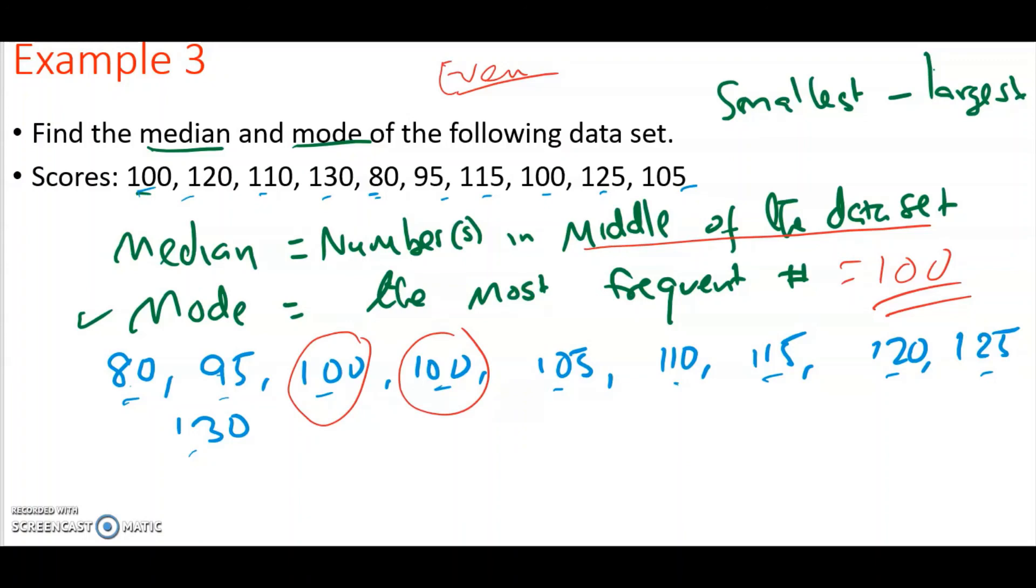So the numbers are 10 here. If I count 4 on this side - 1, 2, 3, 4 - and 4 on the other side, the two numbers that fall in the middle are 105 and 110. So what I have to do is I add those two and divide by 2. So this will give me 215 divided by 2, which is equal to 107.5. So that is the median number. This is the median, and the mode is 100.